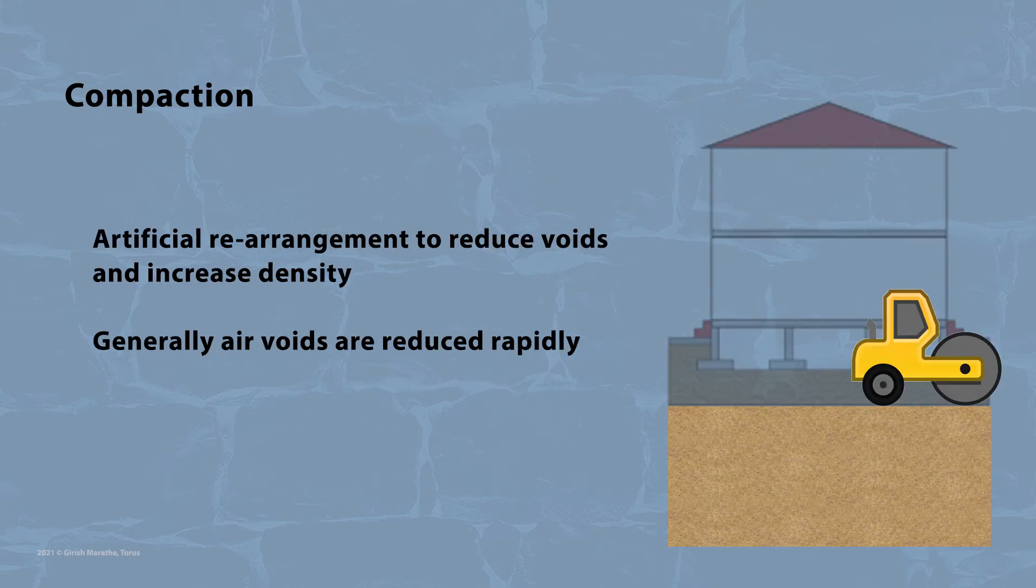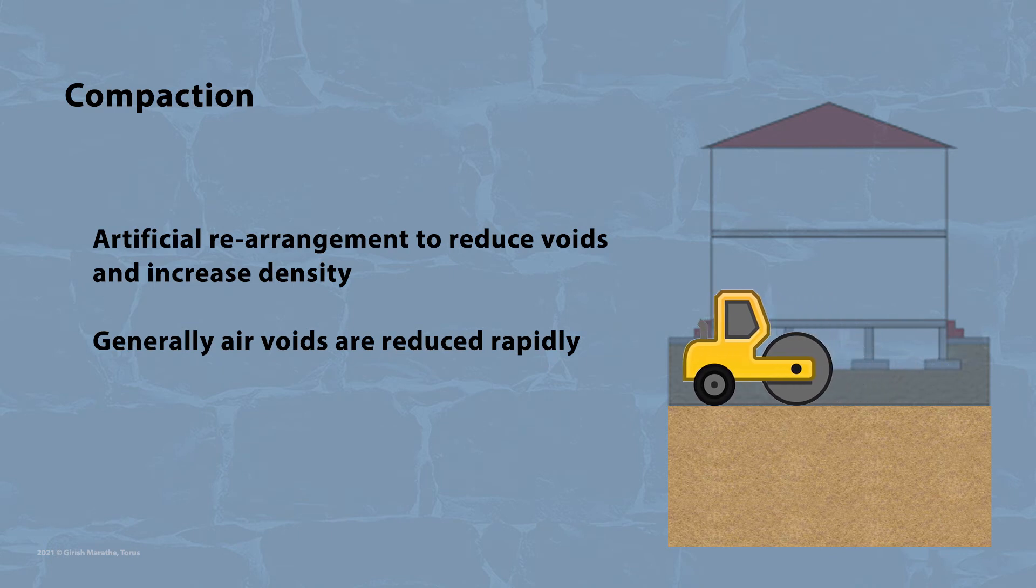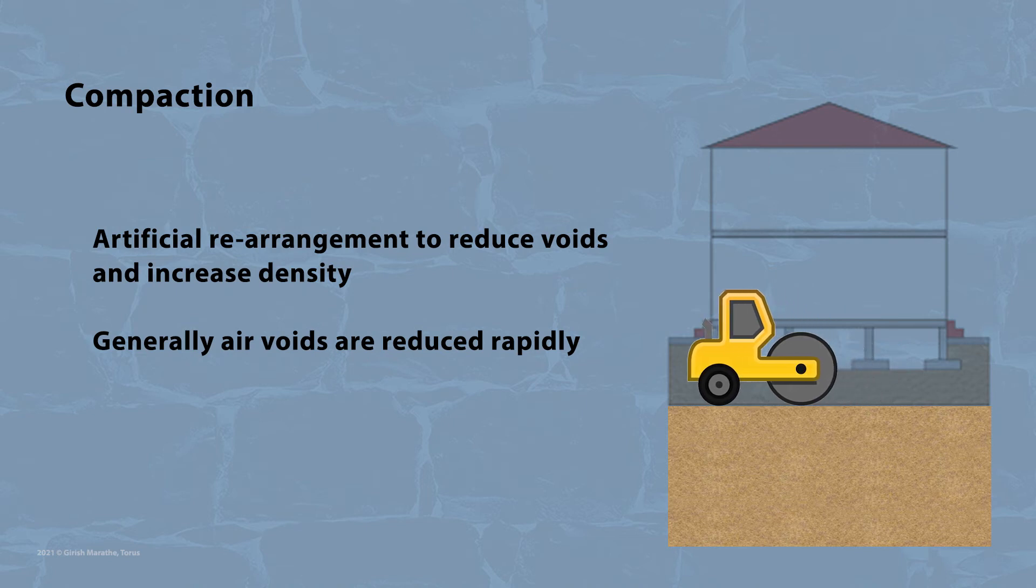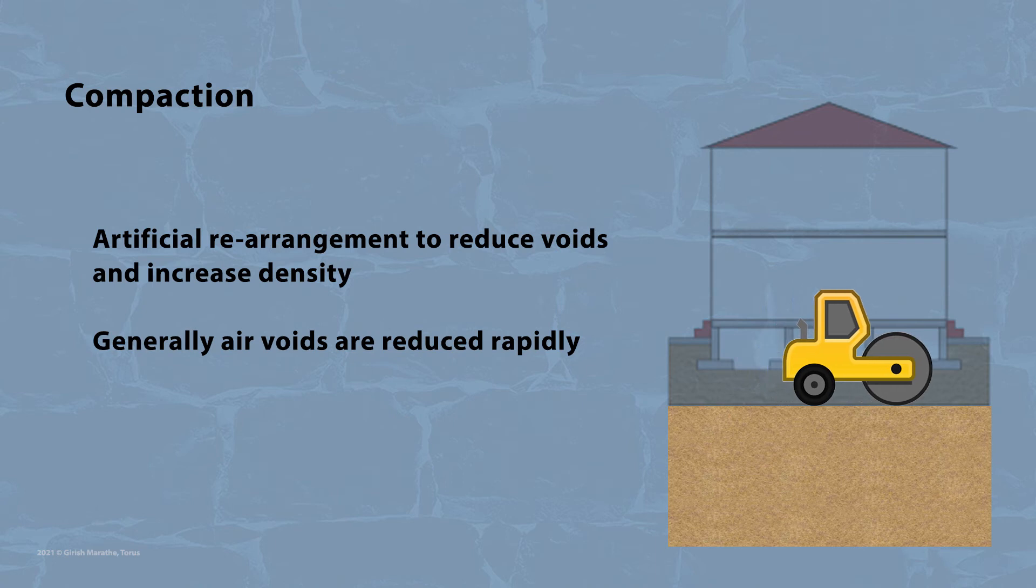Compaction simply refers to artificial rearrangement of soil particles to make them compact and reduce voids. This leads to increase in density of soil, and thereby the load-carrying capacity of soil. Compaction refers to rapid reduction of voids, particularly air voids, under short duration.